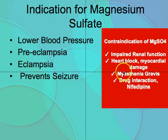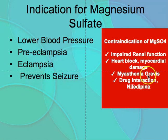The contraindications for magnesium sulfate include: patients with impaired renal function, patients with heart block or myocardial damage, patients with myasthenia gravis, and patients taking nifedipine, as magnesium sulfate interacts with that medication.